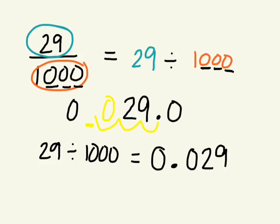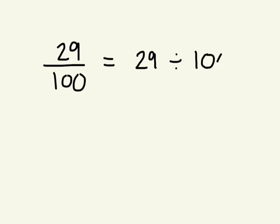What if I divide 29 by 100? 29 hundredths, or 29 divided by 100. How many places do you think I'm going to move the decimal this time? Two places to the left. Good. Two places to the left, because there's two zeros in the number 100.